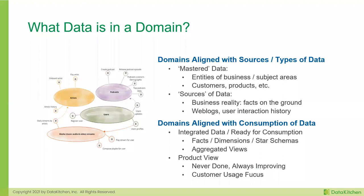How do I divide the domain? I've got a data lake with 100 different data sets — how do I put them together? The domains could be aligned with sources or types of data — entities of business, subject areas, customers — or they could be sources like web logs or interaction history. Alternatively, domains could be aligned with the consumption of data — four of those 100 data sets integrated into one set of facts, dimensions, and aggregate views, or around the product being used.